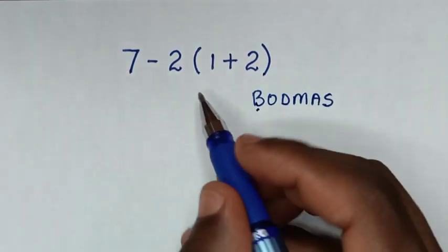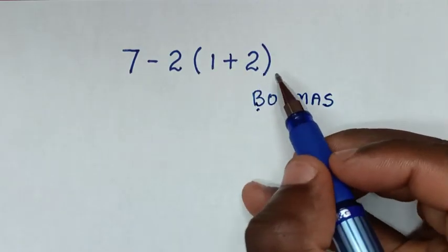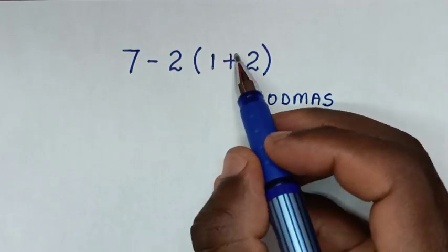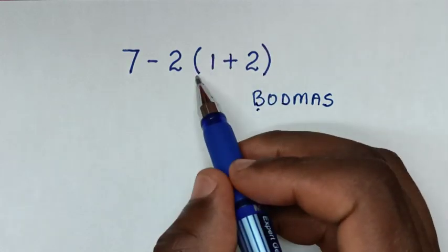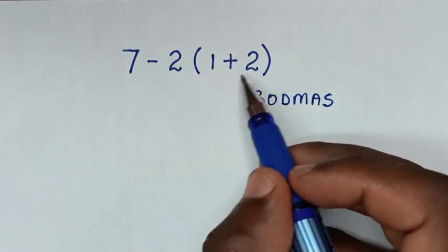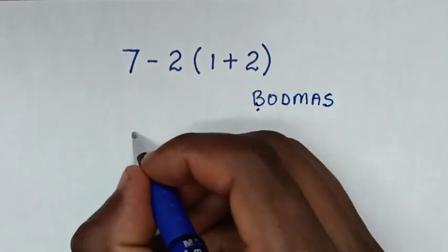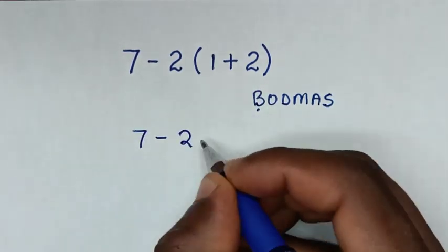In this problem we have a bracket, and the operation inside the bracket is addition. So I'll start by doing this addition inside the bracket: one plus two is three. So it will be seven minus two, then bracket three.